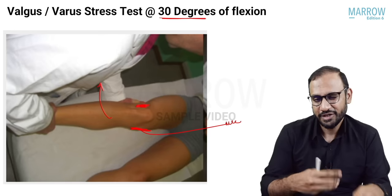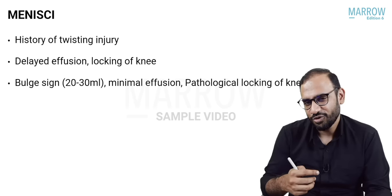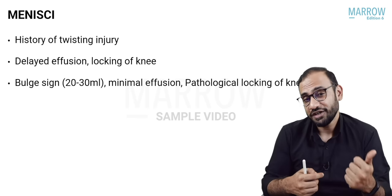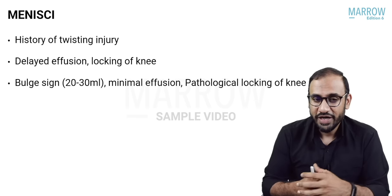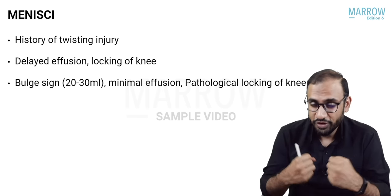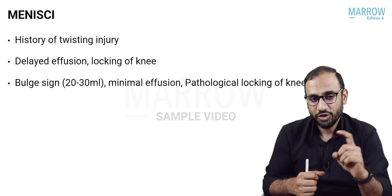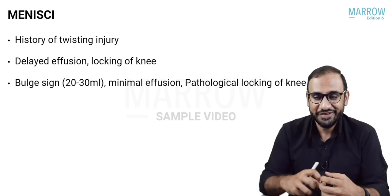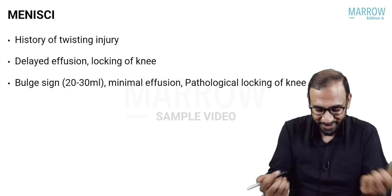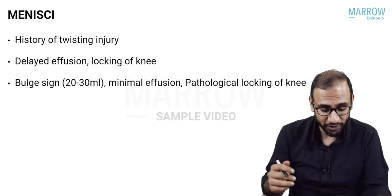We have understood the anatomy, function, and how collateral ligaments get injured and how to clinically diagnose a collateral tear. Let's move on to meniscus. For meniscus, we've covered anatomy, function, and injury mechanisms. Now let's see how we can test them and provoke their symptoms. Since they are rotational or torsional stabilizers, to test them we need to rotate the knee.